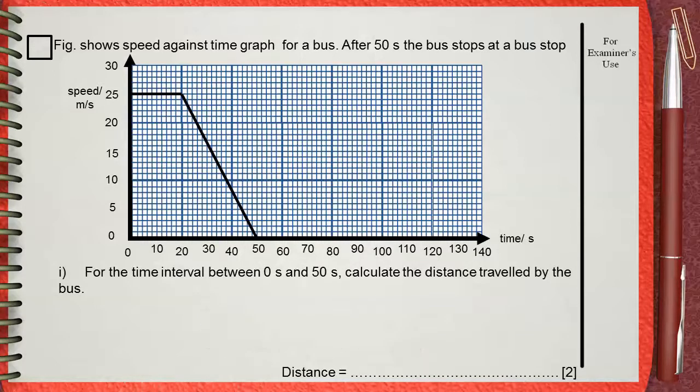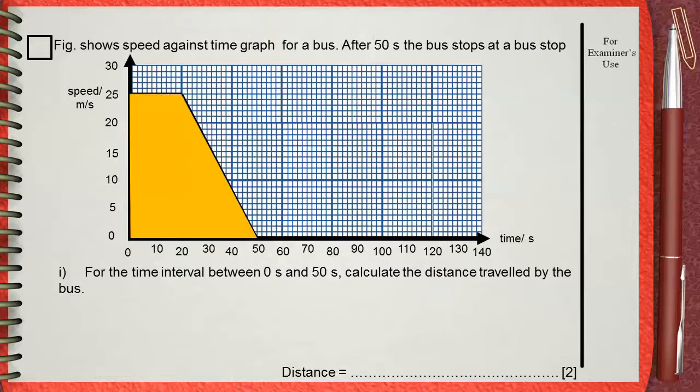Since what we have is a speed-time graph, simply the distance is given by the area under graph. In this case we have a trapezium. Distance equals area under graph. The area of the trapezium is given by the length of base 1 plus the length of base 2 divided by 2 multiplied by the height.